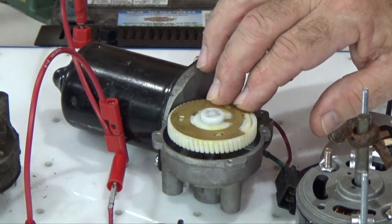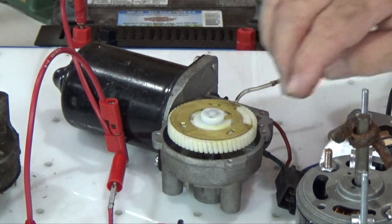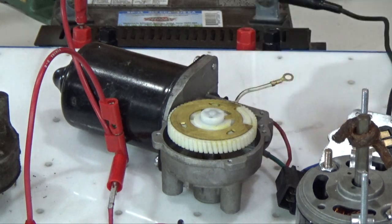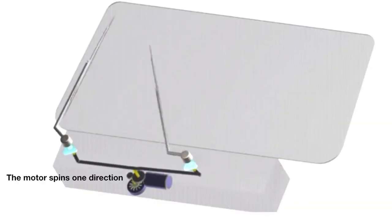In order to be able to reach a park position, we have to be able to get this gear to stop at the point that the two contact points are on the plastic. That's why we need braking. The wiper motor only spins in one direction.